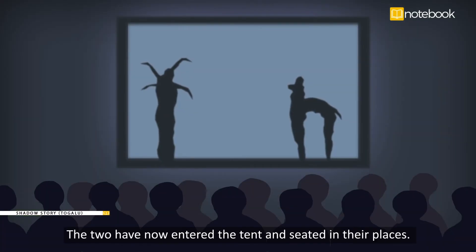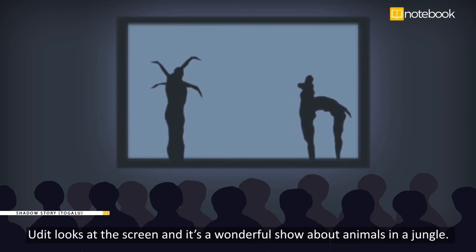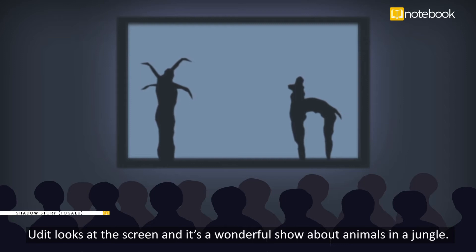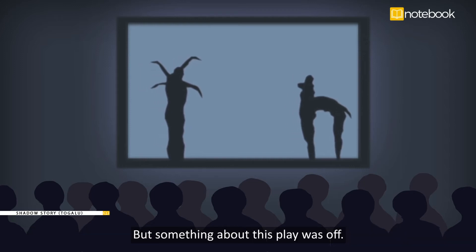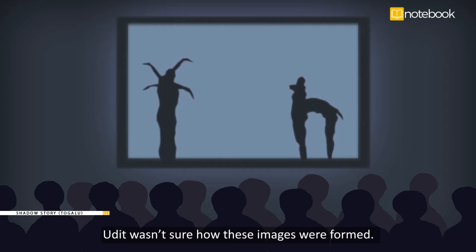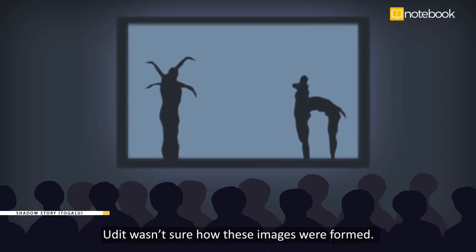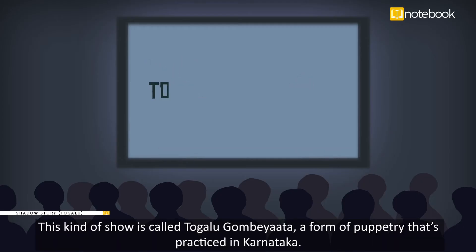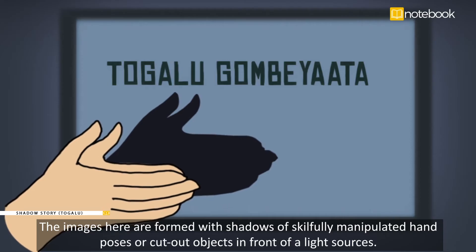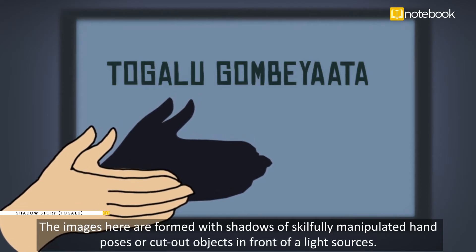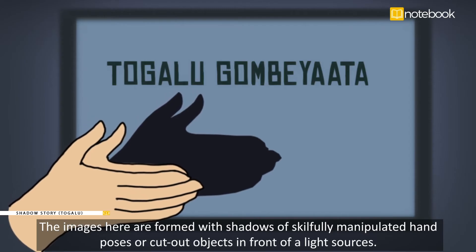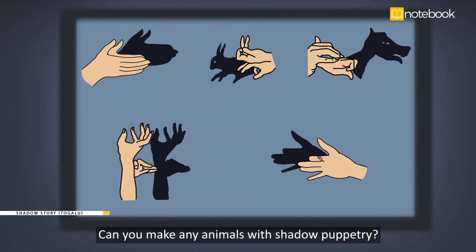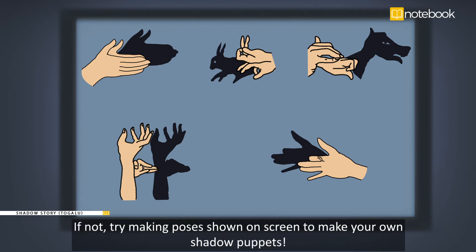The two have now entered the tent and are seated in their places. Udit looks at the screen and it's a wonderful show about animals in a jungle. But something about this play was off — Udit wasn't sure about how these images were formed. This kind of show is called Togalu Gombeata, a form of puppetry practiced in Karnataka. The images are formed with shadows of skillfully manipulated hand poses or cut-out objects in front of light sources. Can you make any animals with shadow puppetry? If not, try making the poses shown on screen to make your own shadow puppets.